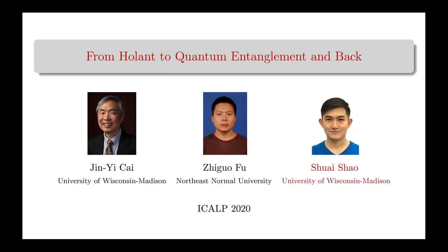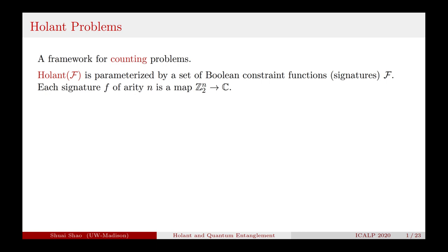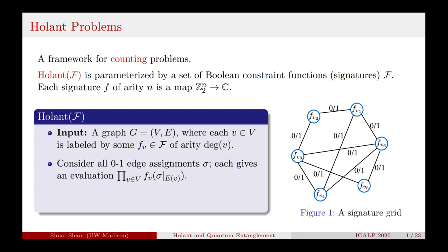Let's first introduce Holant problems. It's a framework for counting problems. Such a problem is parameterized by a set of boolean constraint functions, also called signatures. Each signature of arity n is a map from the n-dimensional boolean domain to any complex value. The input is a signature grid — a graph where each vertex is labeled by some signature. We consider all 0-1 edge assignments, and each gives an evaluation which is the product of all signature values among all vertices. The output is the sum of all products over all possible edge assignments. So the Holant problem is a sum-of-product computation.